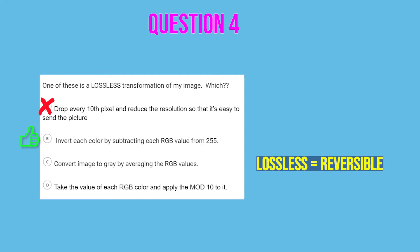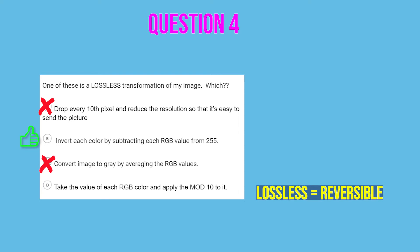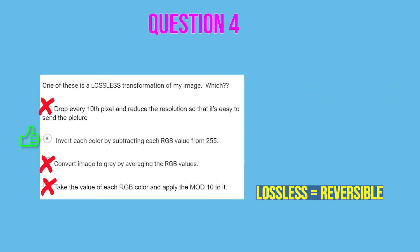For C, convert the image to grayscale by averaging the RGB values. If you have three numbers and you average them, you cannot go backwards — it's not reversible, so it's not C. For D, a mod operation. Mods are not reversible. For example, 11 mod 10 equals 1, and 21 mod 10 also equals 1 — so you don't know whether you started with 11, 21, or 201. You can't go back, so it's lossy. The only reversible transformation out of these four is the inversion. The answer is B.